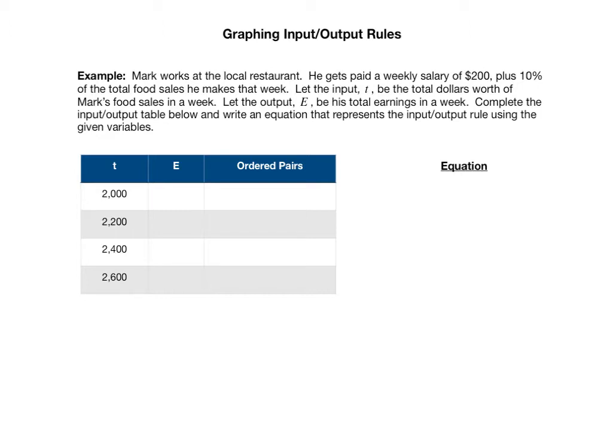Complete the input-output table below and write an equation that represents the input-output rule using the given variables. So these are all examples of amounts of food that he could sell: $2,000 worth, $2,200 worth, $2,400 worth, and $2,600 worth, amongst many other possibilities. So we want to find out how much he would earn.